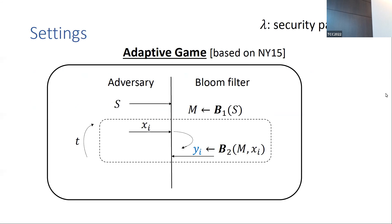In this adaptive game, we consider a polynomial-time adversary consisting of two parts. First, it chooses the set S, which is then given to the setup algorithm of the bloom filter. Then, knowing the set S, it performs adaptive queries, meaning it gets oracle access to the query algorithm. Since the adversary knows S and bloom filters admit only false positives and not false negatives, we assume without loss of generality that the queried elements x_i do not belong to S, meaning they could be either false positives or true negatives.